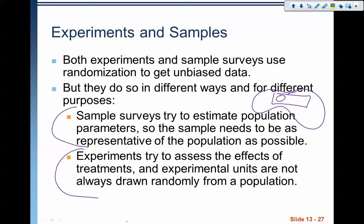Experiments are different. Experiments are trying to assess the effects of a treatment — we're trying to decide: does this manipulating variable have an effect on the response variable? We're not randomly drawing units from a population. In drug trials, for example, if we're trying to cure cancer, we need people with cancer specifically. So we gather a group of people with cancer and then use randomization to put them into treatment groups — using randomization differently than in a sample survey.